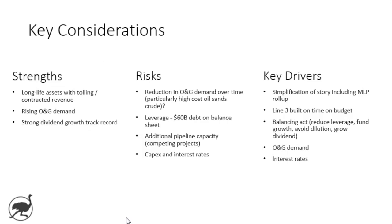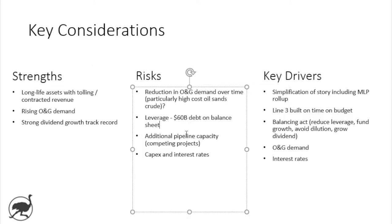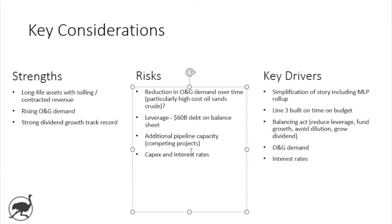Lastly, capital expenditures and interest rates: as interest rates are beginning to rise, when you've got $60 billion of debt on the balance sheet and you're also a high-dividend stock, in a rising interest rate environment the stock can come under pressure as investors might rotate out and back into bonds. Just something to keep in mind for Enbridge stock.